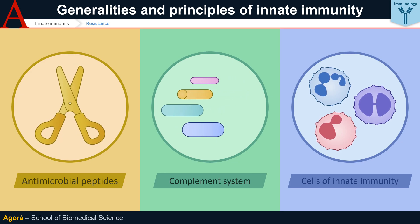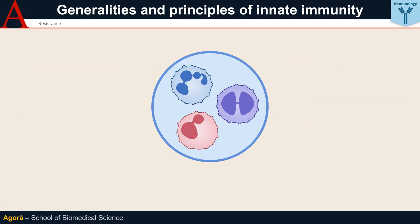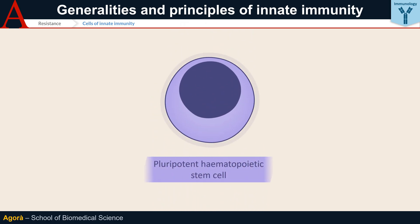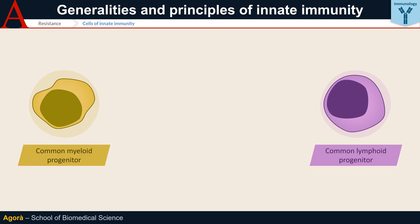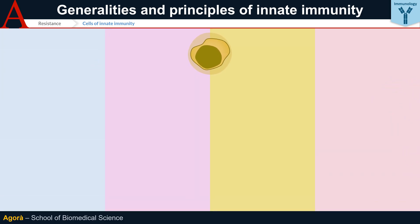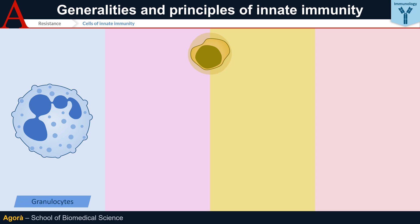White blood cells are the main cells of the immune system. They are a large family of cells widely different in form and function, but all derived from a single pluripotent hematopoietic stem cell. This cell, in turn, gives rise to a common myeloid progenitor and a common lymphoid progenitor. Most, but not all, of the cells of innate immunity originate from the common myeloid progenitor.